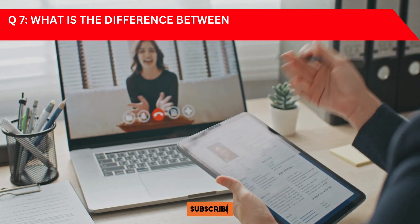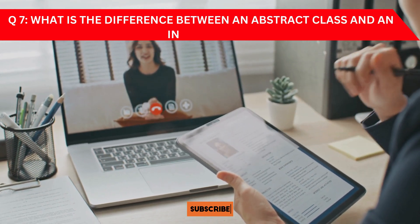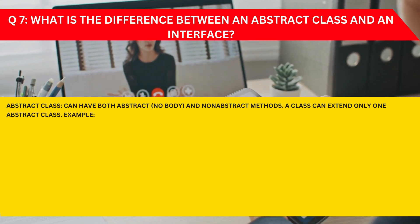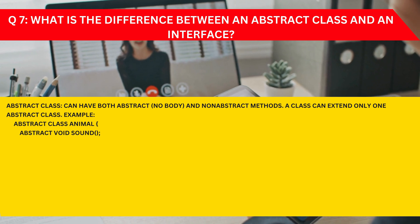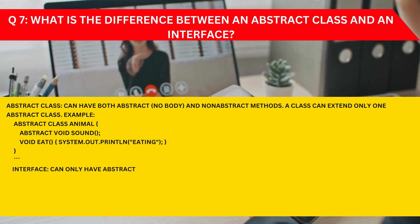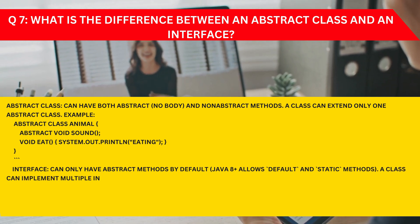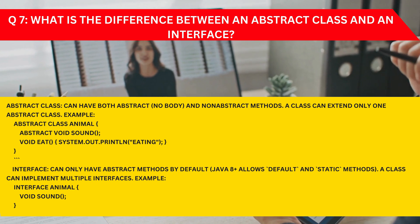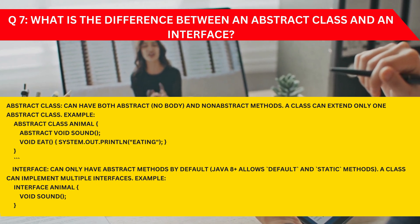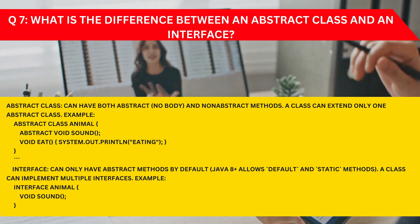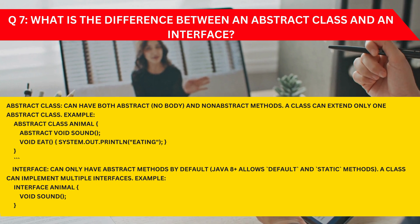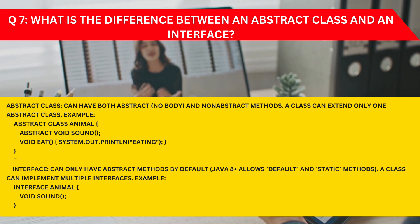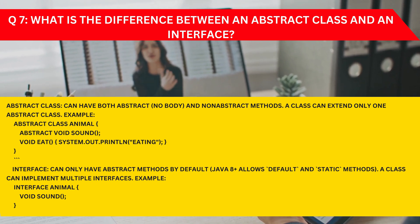Question 7: What is the difference between an abstract class and an interface? An abstract class can have both abstract (no body) and non-abstract methods, and a class can extend only one abstract class. An interface can only have abstract methods by default — however, Java 8+ allows default and static methods. A class can implement multiple interfaces.